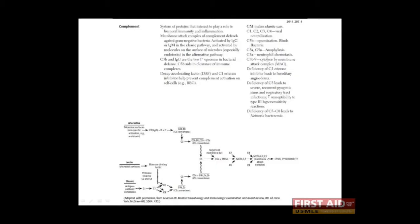Okay, so the complement cascade, here it is. Complement proteins are actually glycoproteins, most of which are produced in the liver and secreted into the blood.